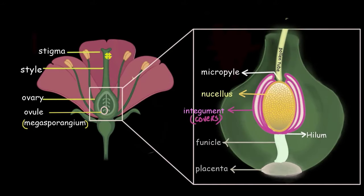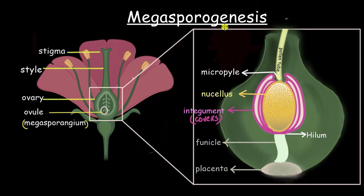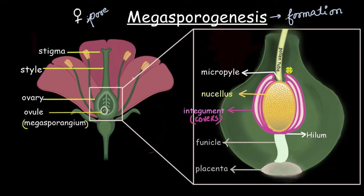In our previous videos we discussed the female reproductive part of a flower and saw in detail the structure of the ovule, also called the megasporangium. This megasporangium or ovule is the place where megaspores will develop — megaspores meaning the female spores. The entire process of formation of megaspores in the ovule is called megasporogenesis. Mega refers to it being comparatively bigger than male spores, which are called microspores, and genesis means formation.